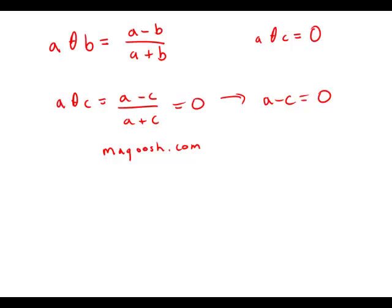So meanwhile, we know that the numerator has to equal zero. If a minus c equals zero, that means a equals c. So c has to equal a, which is answer choice E.